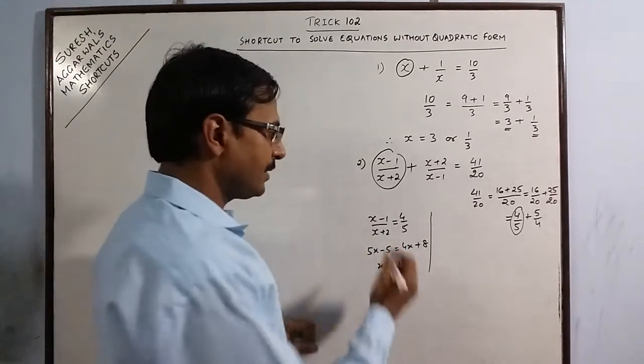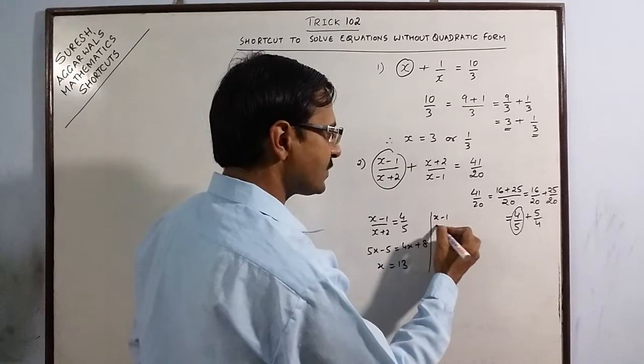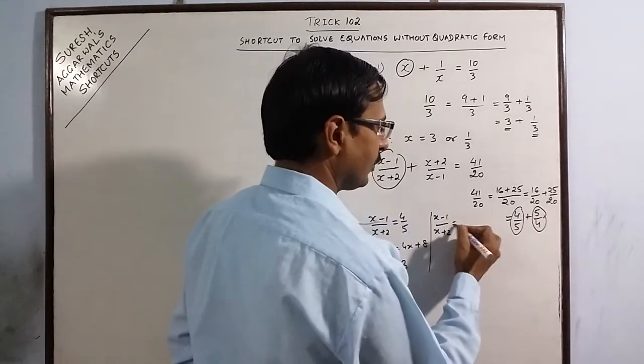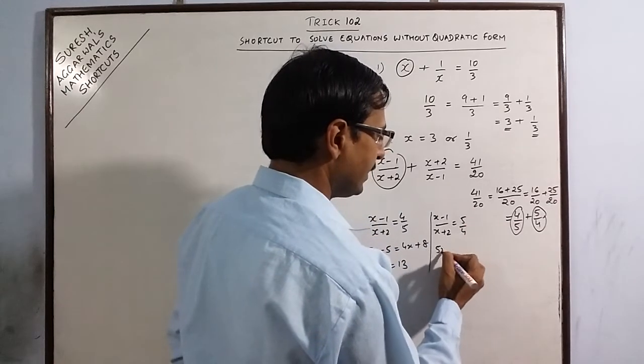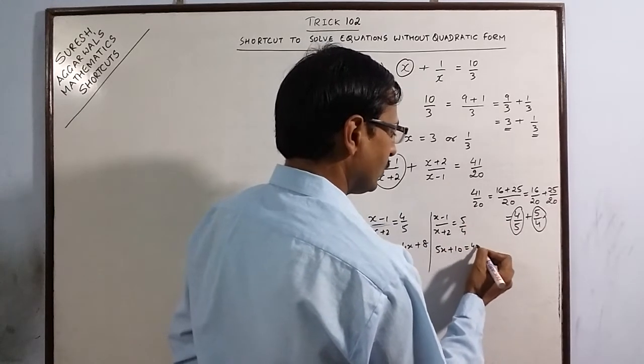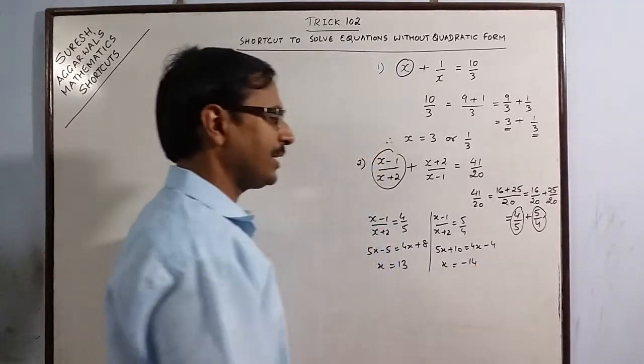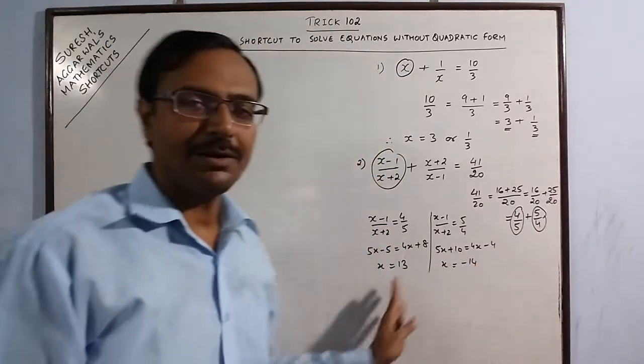And in the second part, take the same thing again, x minus 1 upon x plus 2 and this time, use the second term here, 5 by 4. And now, cross multiply, this will give you the second answer, minus 14. So, your answers are 13 and minus 14.